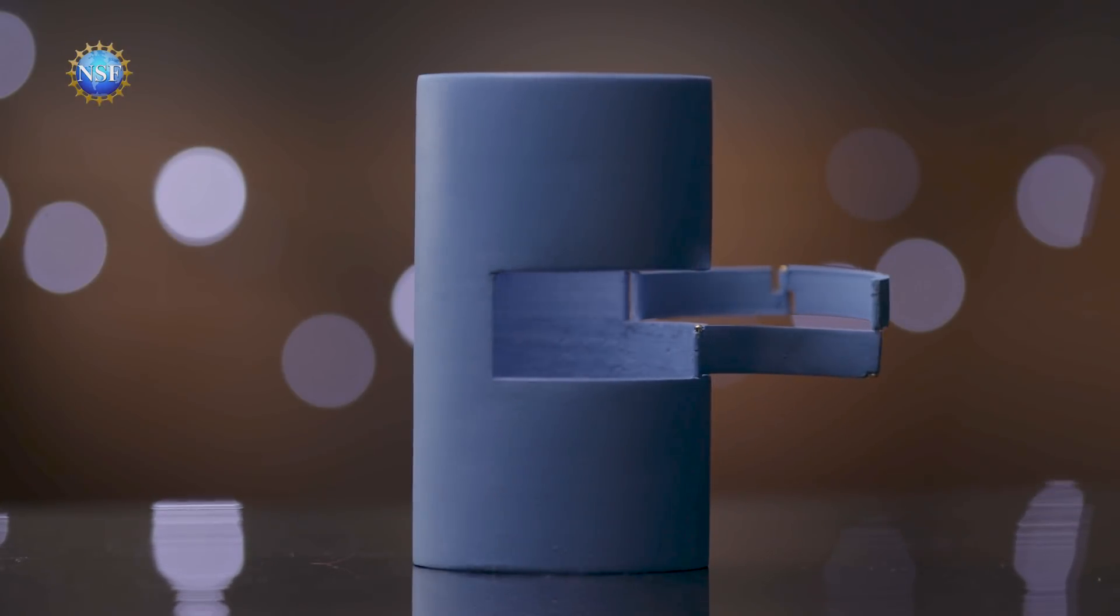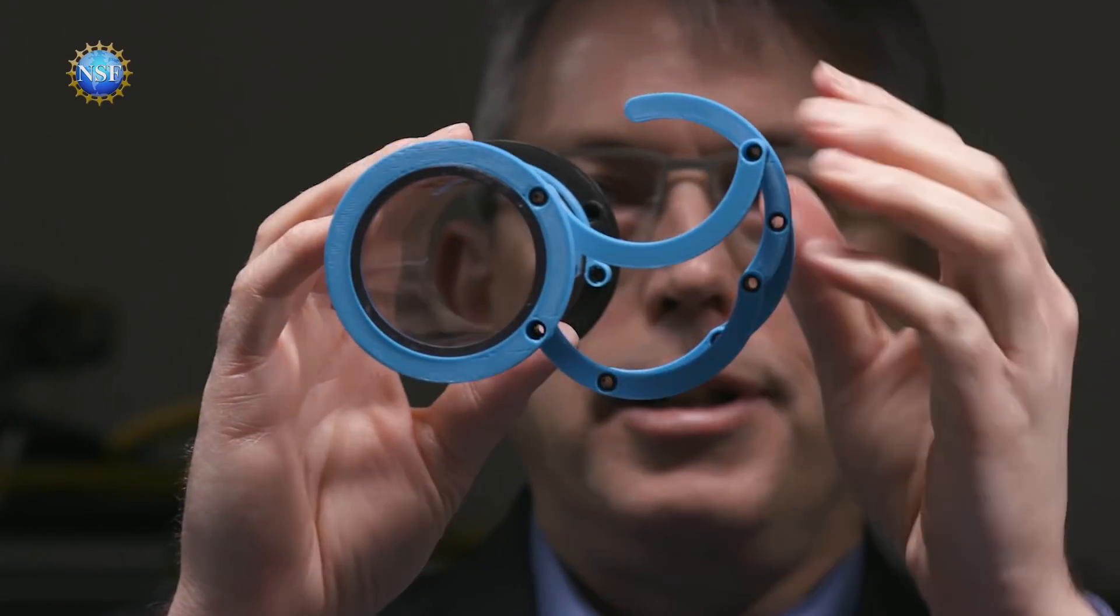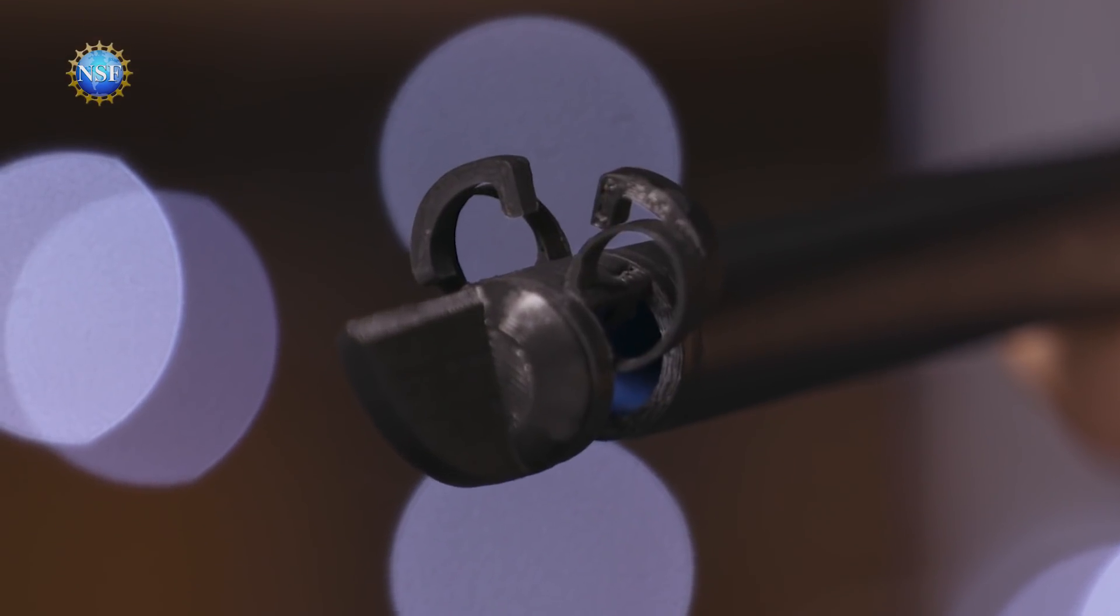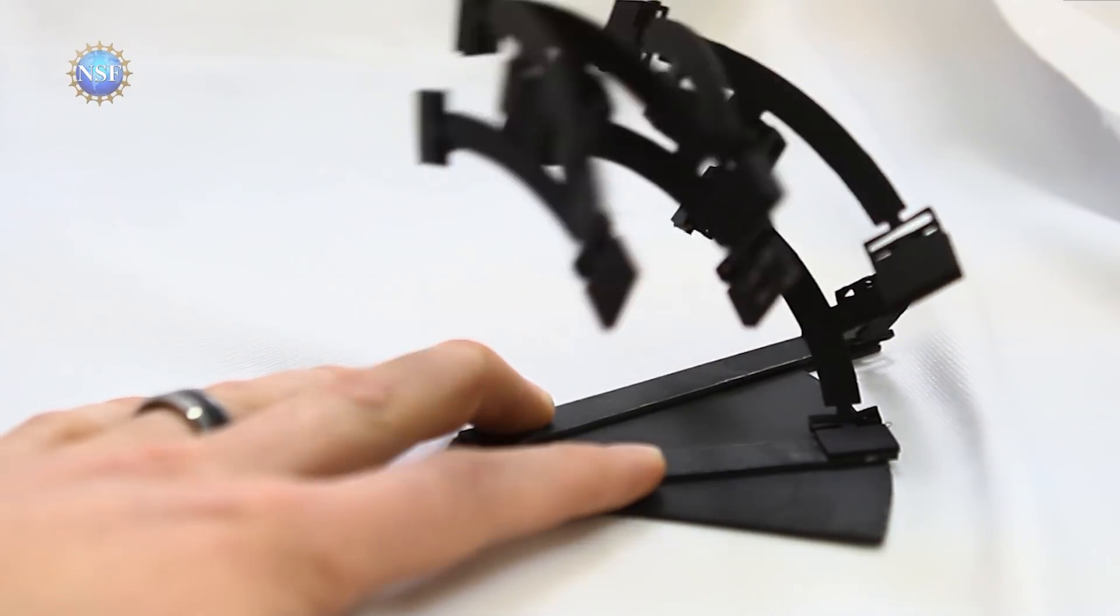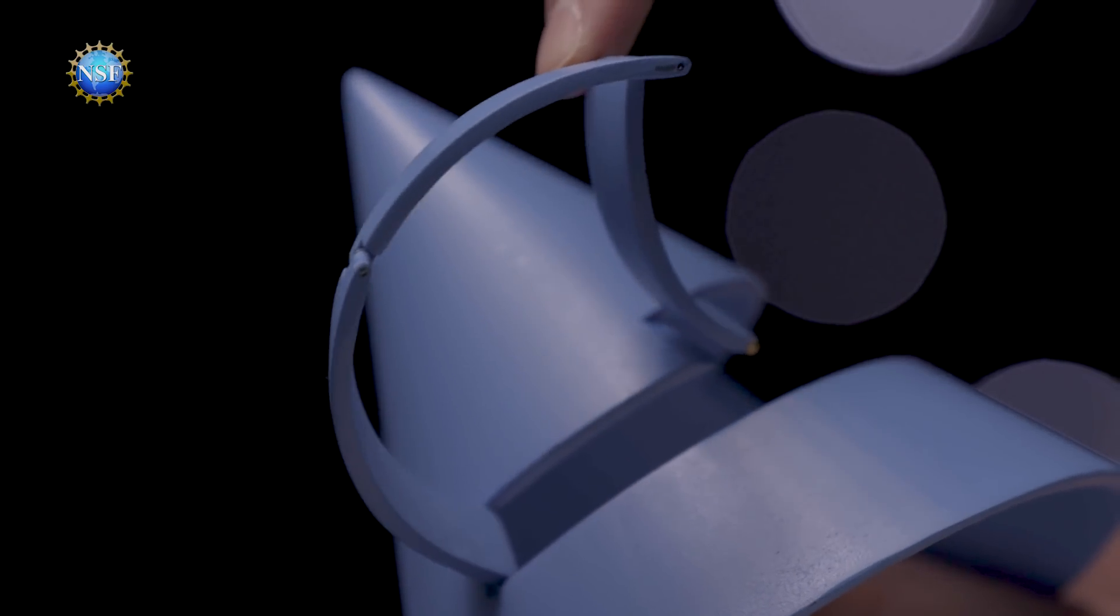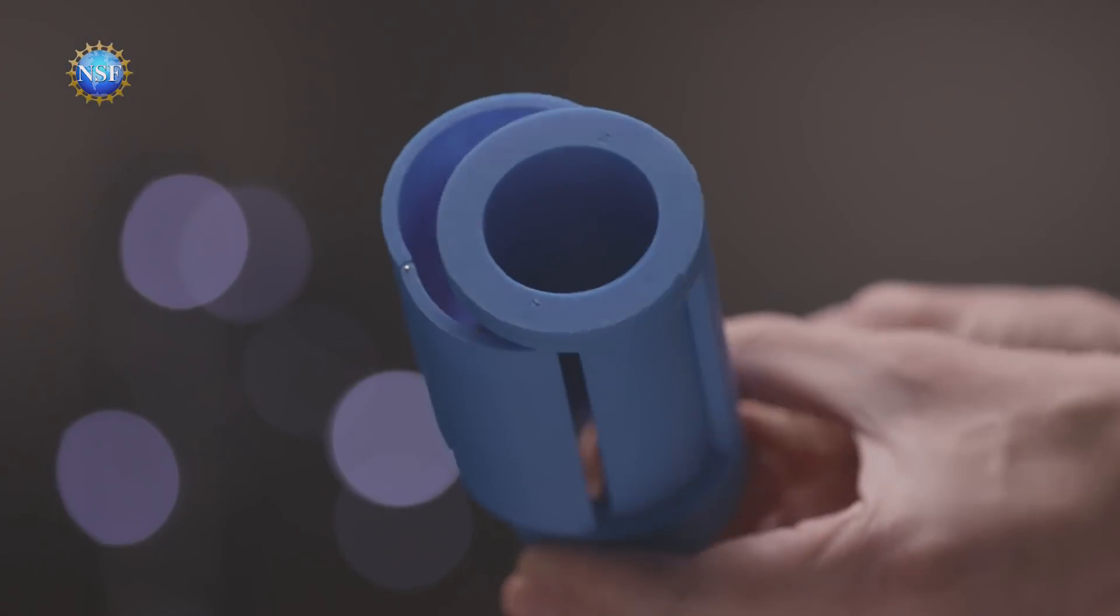These origami-inspired designs are hidden in plain sight. They're called developable mechanisms—materials that take on 3D shapes, popping out from curved surfaces without tearing, stretching, or sacrificing space.